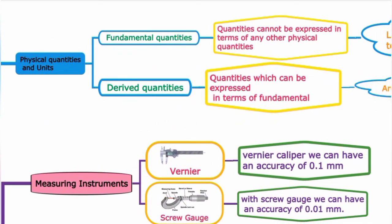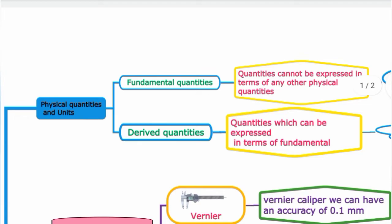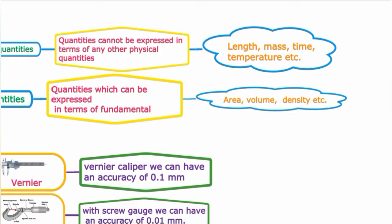Derived quantities are quantities which can be expressed in terms of fundamental quantities. Examples of derived quantities include area, volume, density, etc.